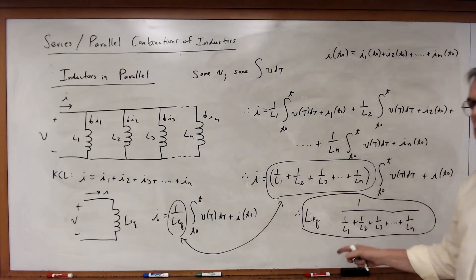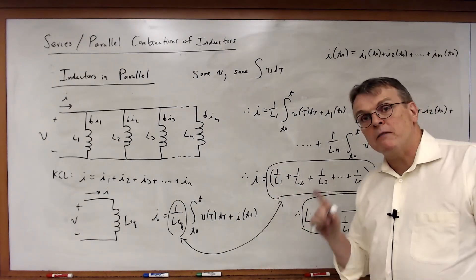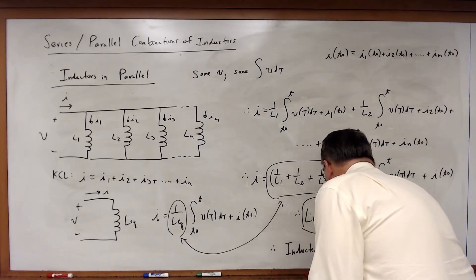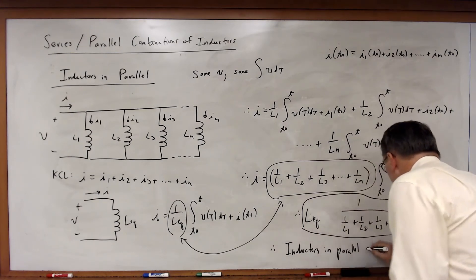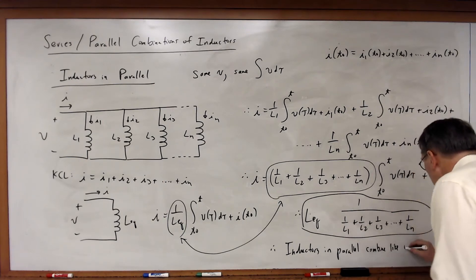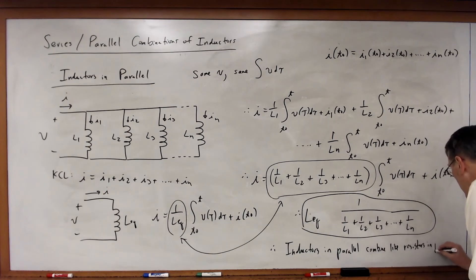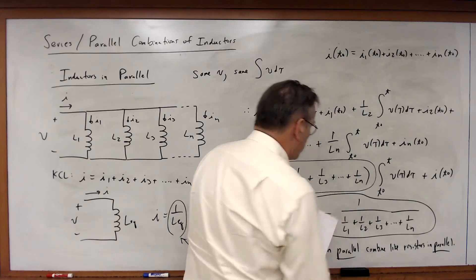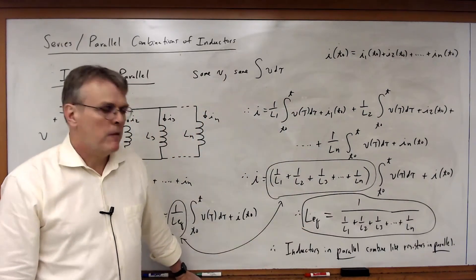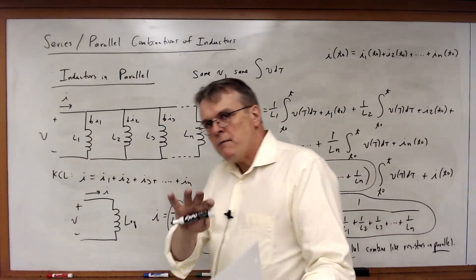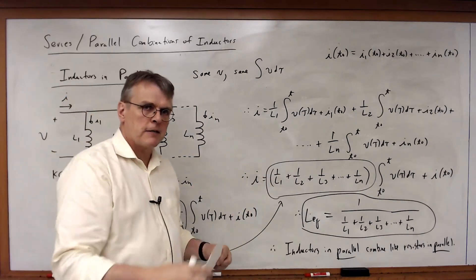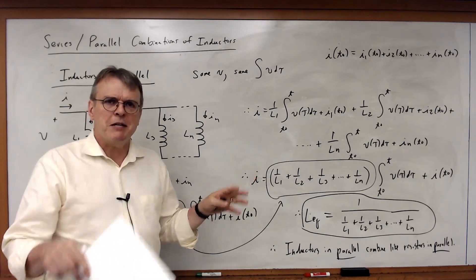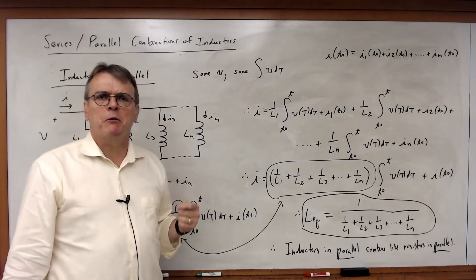So what we find is inductors in parallel combine the same way that resistors in parallel combine — same form of the equations. L-equivalent equals 1 over the sum of the inverses. Inductors and resistors have the same form when they combine; capacitors are opposite, which is an interesting result. We'll talk a little bit later about a more qualitative viewpoint about why that is true — why they seem to do these things oppositely.